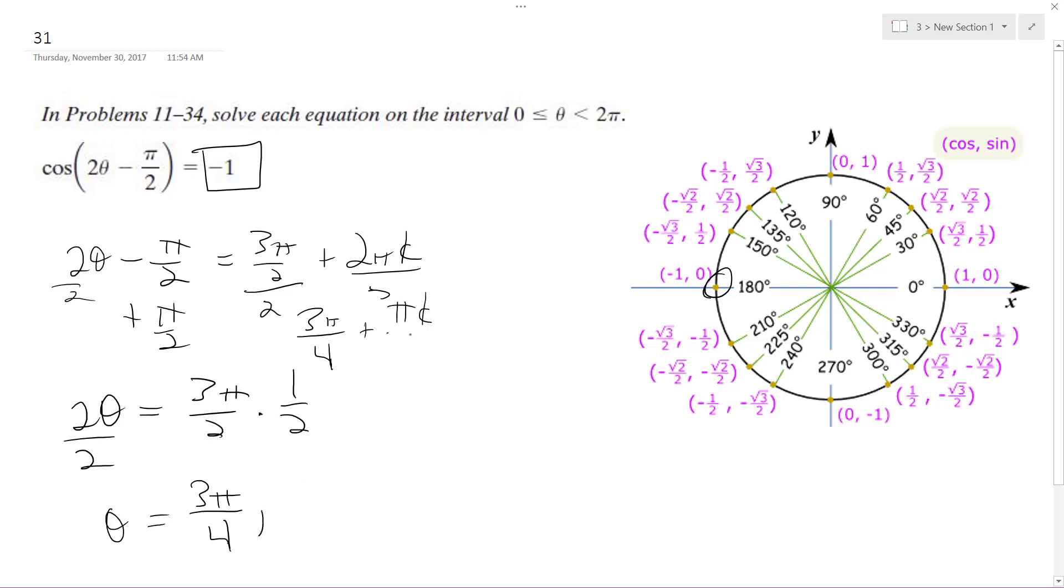So that means my possible solutions, and then if I add another pi, it's 7 pi over 4, which is valid. It's between 0 and 2 pi.